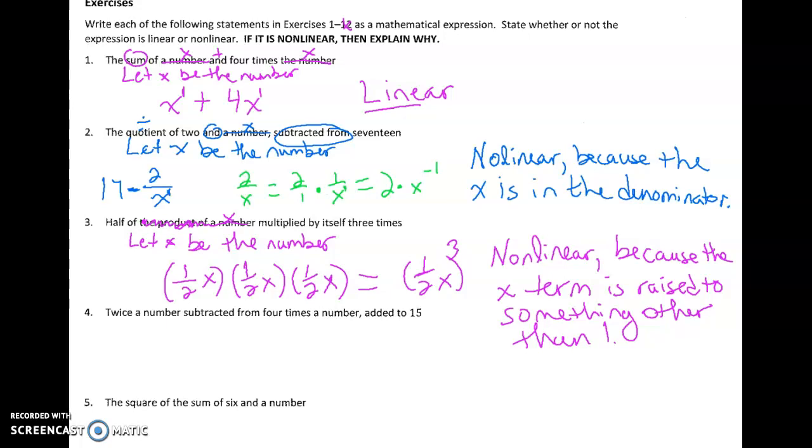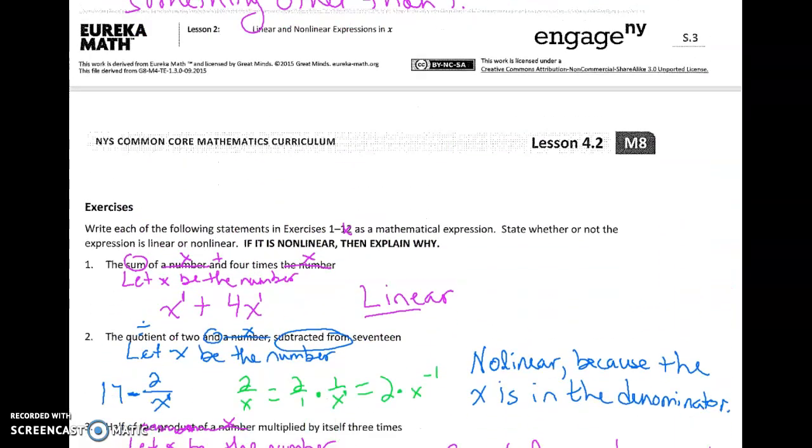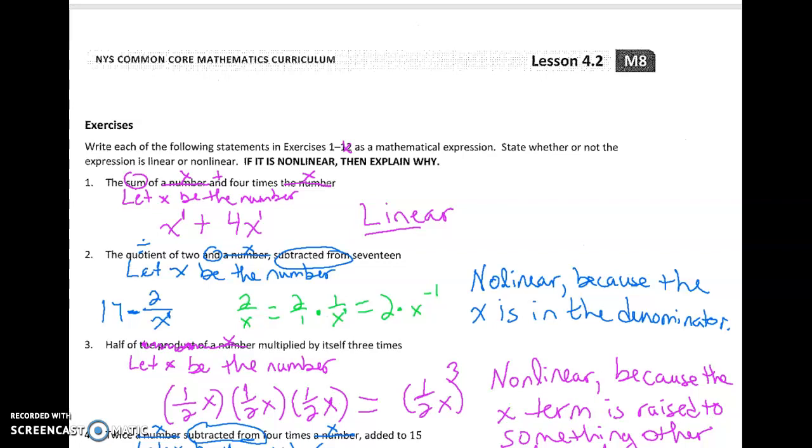Twice a number subtracted from four times a number added to 15. Let x be the number. So twice x subtracted from four times x added to 15. Notice we have subtracted from here. So if I have twice x, two times x subtracted from, that means it comes out front here: four times x, twice a number, two times x subtracted from four times x added to 15. Again, I know we can simplify that but it's not what it's asking for. Linear or nonlinear? Well, this is to the first power, this is to the first power, you just say it's linear.